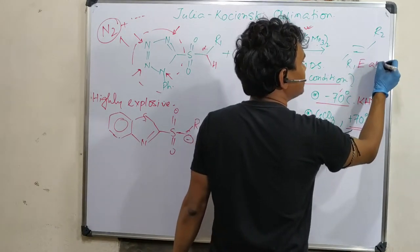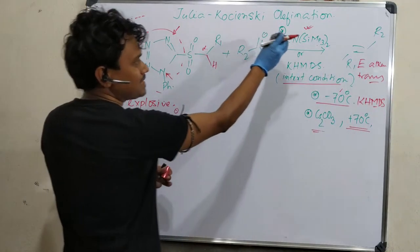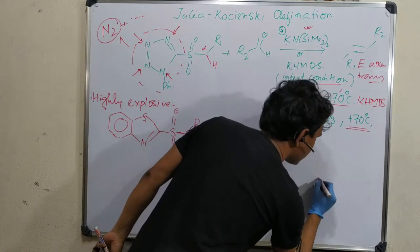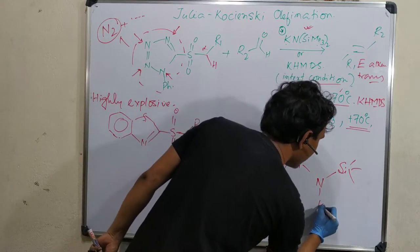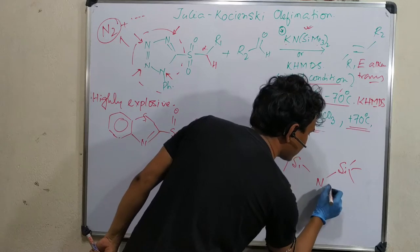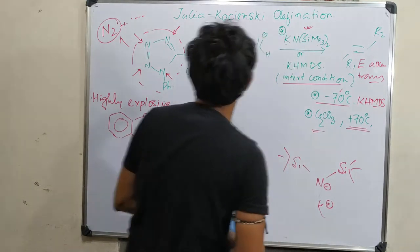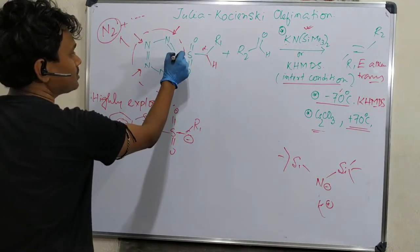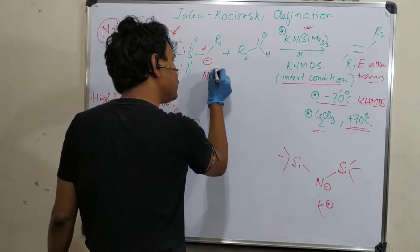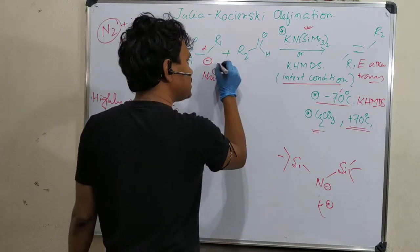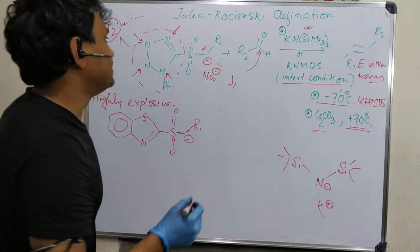After KHMDS addition, I'll show you about this reagent - this is the nitrogen, this is the silicon. You can see how much bulkiness, and the counter ion is potassium. This is a very bulky, highly reactive reagent that specifically abstracts protons. It will selectively abstract proton from here to produce the carbanion which is a nucleophile. This carbon center is the electrophilic center, so it will attack and produce a final hydroxy derivative.